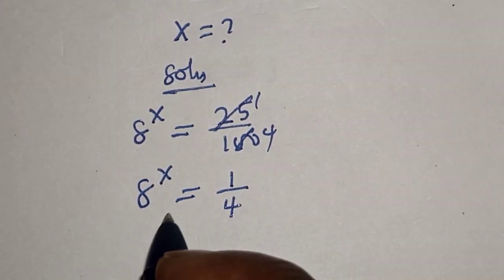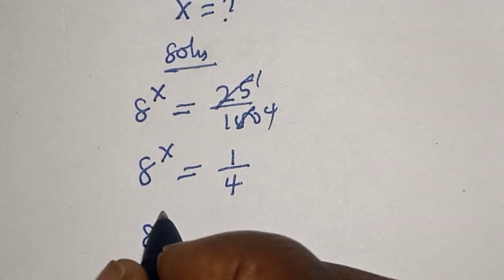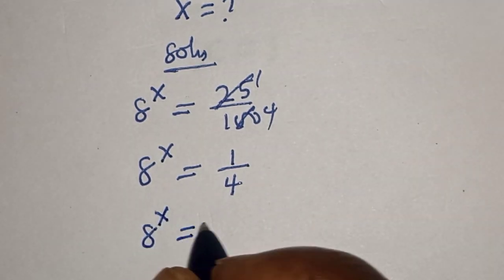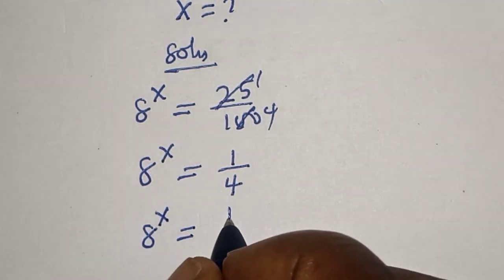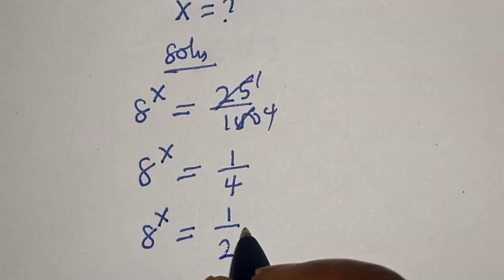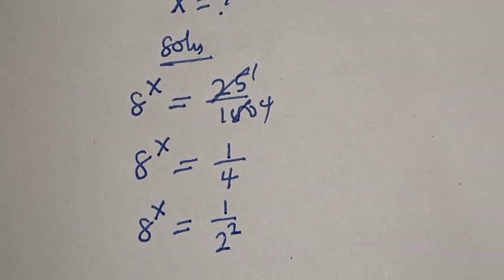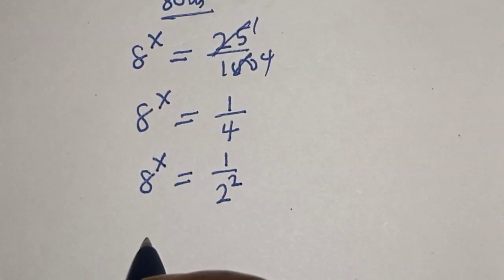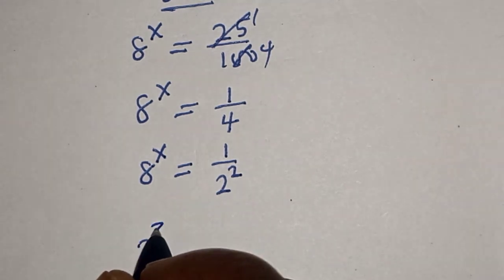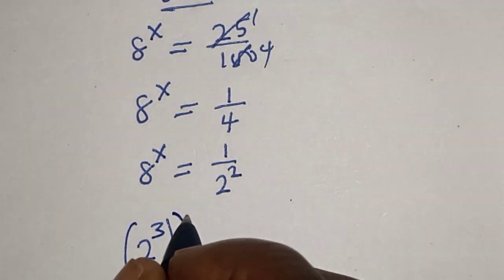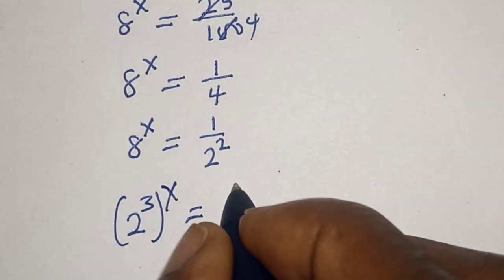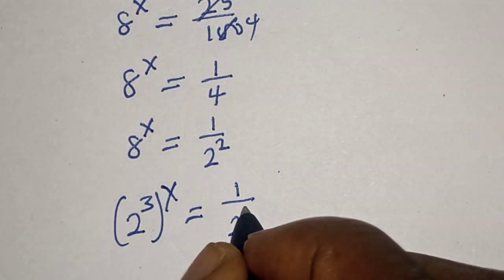Then 8 to the power of x equals 1 over 2 to the power of 2. Now, 8 raised to the power of x can be written as 2 cubed raised to the power of x, which equals 1 over 2 squared.